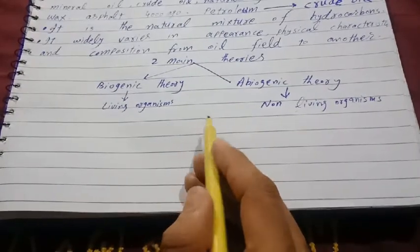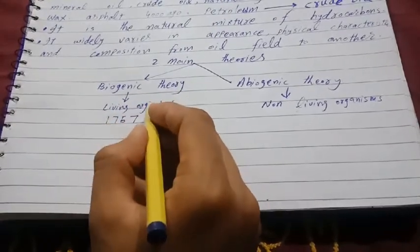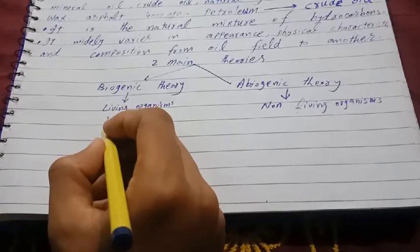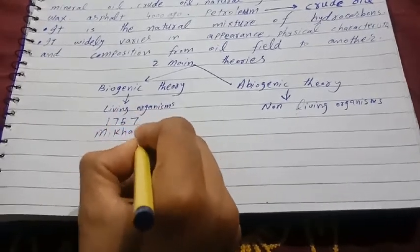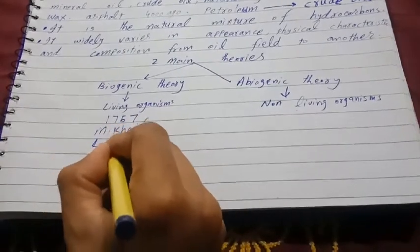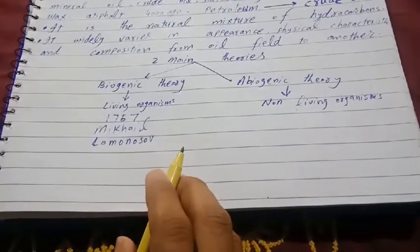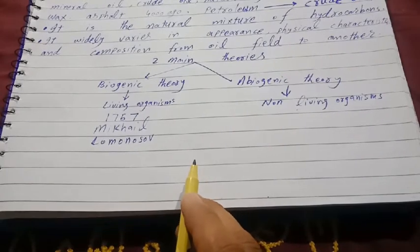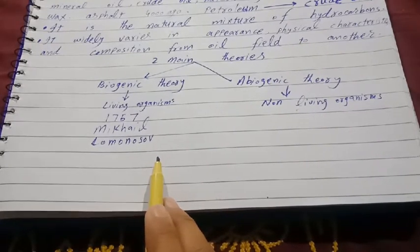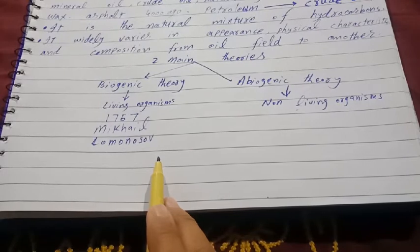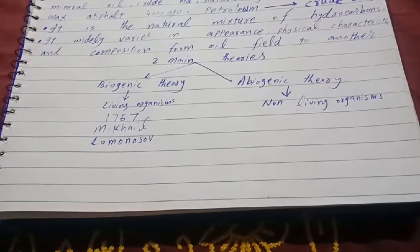The biogenic theory was first proposed in 1757 by Russian scholar Mikhail Lomonosov. Geologists believe that millions of years ago, the dead bodies of living organisms accumulated in shallow marine water.